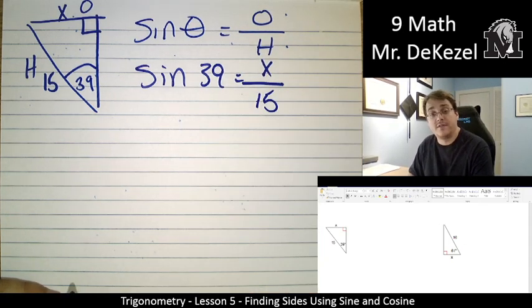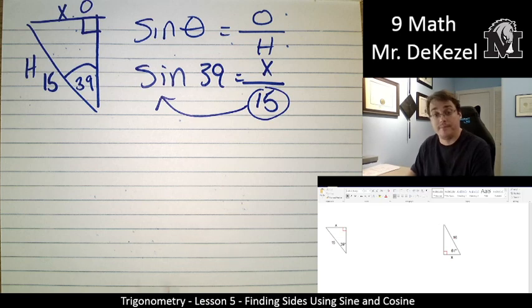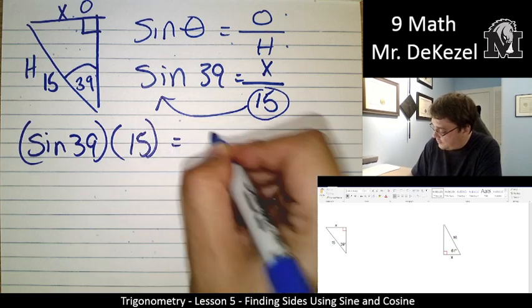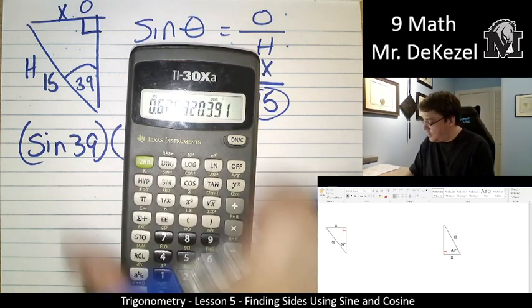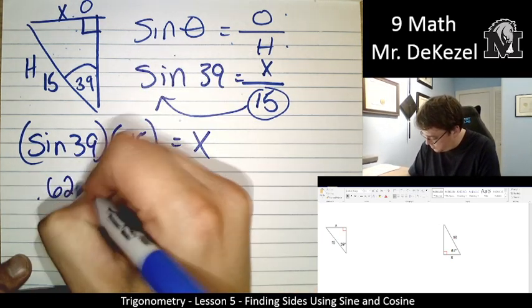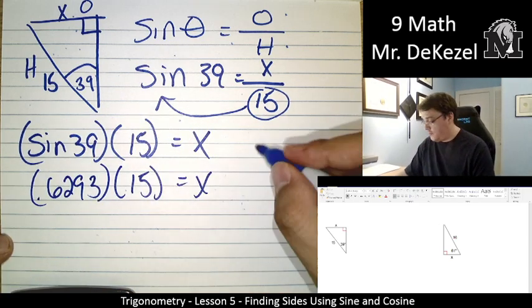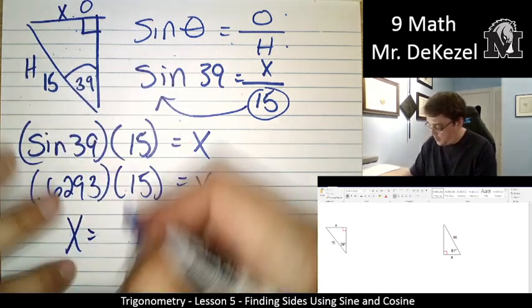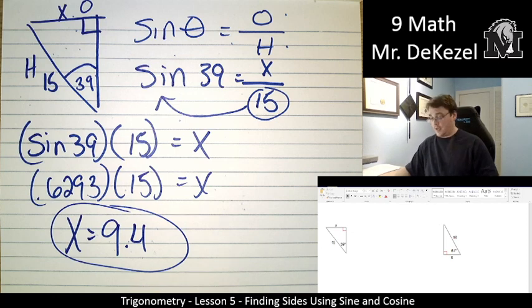We want to get x all by itself on this side. So, we take the 15 that's on the bottom. On this side, we move it to the top. On the other side, that's sine of 39 multiplied by 15. It's equal to x. We go ahead and do that in our calculator. 39 sine is 0.6293. Multiply that by 15. 9.4... Let's call it 9.4. I don't know why I want to keep going. Okay. There it is.